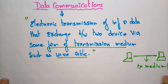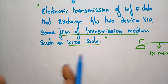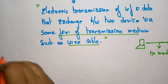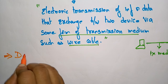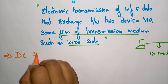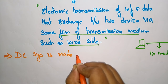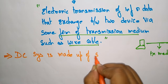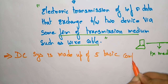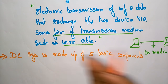Now let us see what are the components involved in data communication. A data communication system is made up of five basic components. These are what are required to transmit data from one system to another system.